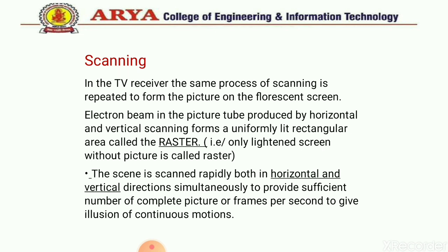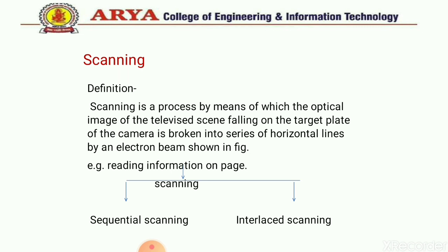Now, scanning. In scanning, the electron beam is scanned from left to right and top to bottom. The scene is scanned rapidly both in horizontal and vertical directions simultaneously to provide a sufficient number of complete pictures or frames per second to give the illusion of continuous motion. There are two types of scanning: sequential scanning and interlaced scanning. In sequential scanning, the electron beam starts from top left to bottom right. In interlaced scanning, each frame is divided into two fields, and using this scanning process the flicker problem is eliminated.